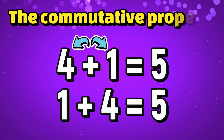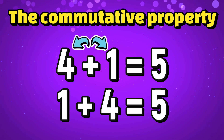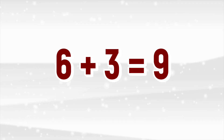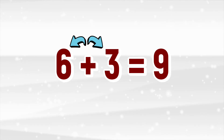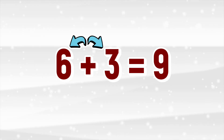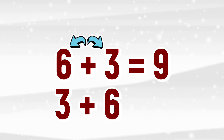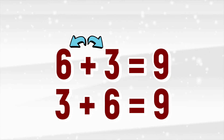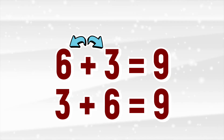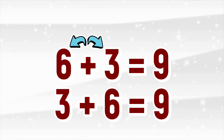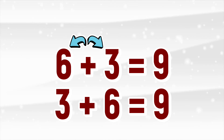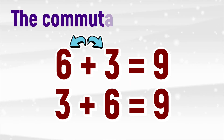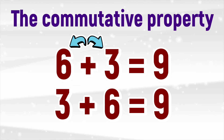That's the commutative property. 6 plus 3 equals 9. Let's switch these around. What's 3 plus 6? 9. That's right. You can switch these numbers around and the answer stays the same.